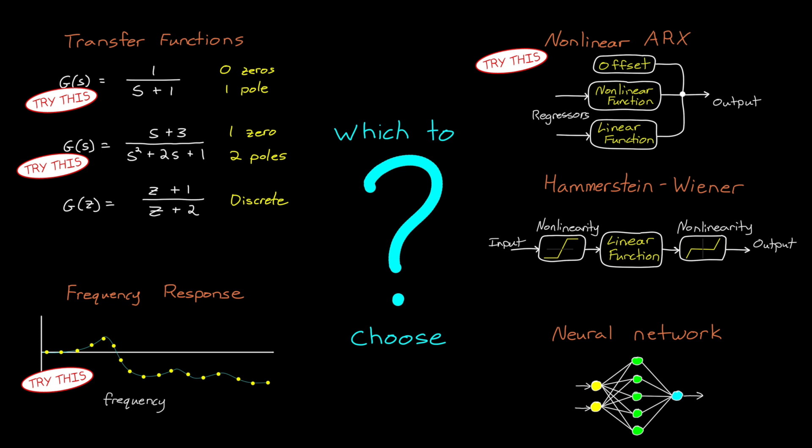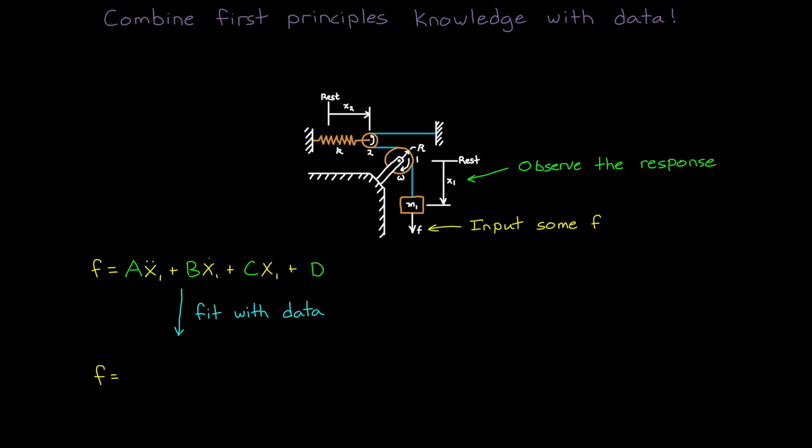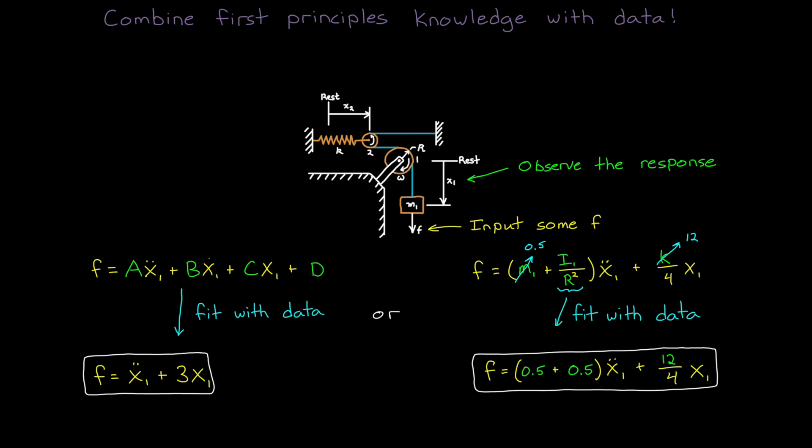However, often you're not approaching the system completely blind. You have some amount of knowledge that you can use to help you choose the right structure and develop the model. For example, if I knew that this was my system, I could figure out ahead of time that a second order model would be sufficient to capture the essential dynamics. And then I could use data and system identification to estimate the parameters of this model. Or I could even take it a step further and derive the differential equations with physical parameters, then fill in the values that I could easily measure, and then estimate the other parameters with data and system identification. This is called a gray box method because it's a combination of using your detailed knowledge of the physics of the system to set up the initial problem, and then using data to learn the remaining portion of the model structure or parameter set.